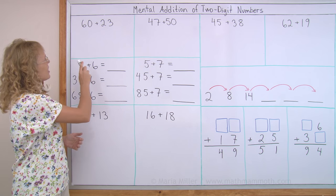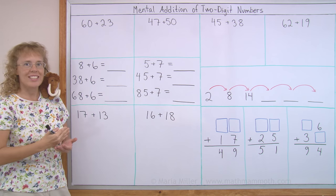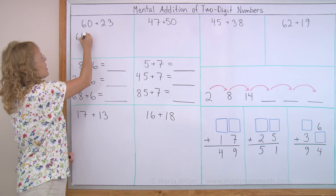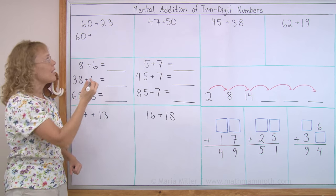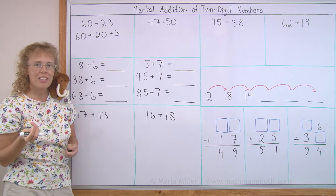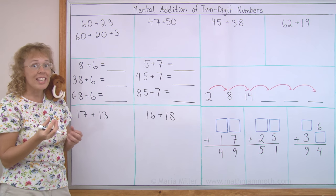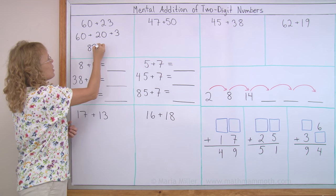First of all, 60 plus 23. Notice that one of these numbers is a whole ten, six tens. So what we can do is, we have the 60, and then we break this number into tens and ones, which is 20 and 3. And then, when you're doing this mentally, you add those tens first. 60 and 20, that makes 80. There's 80, and then there's the 3, so 83.